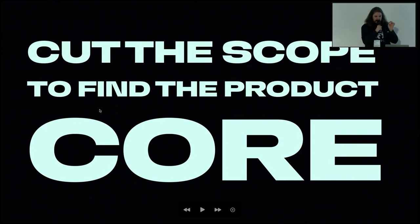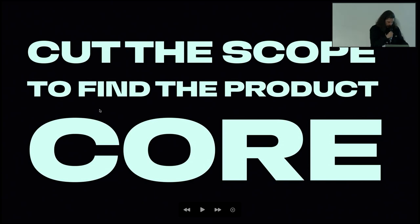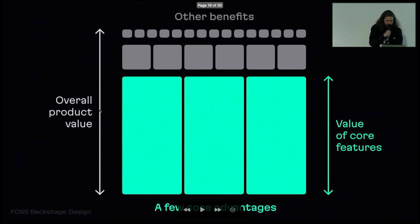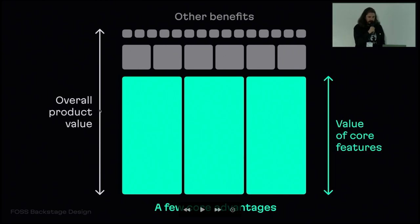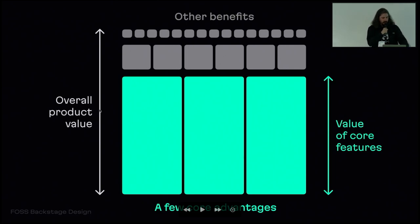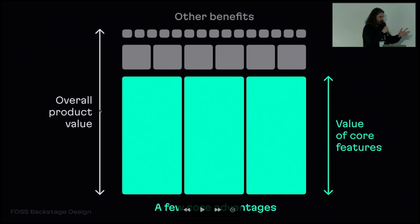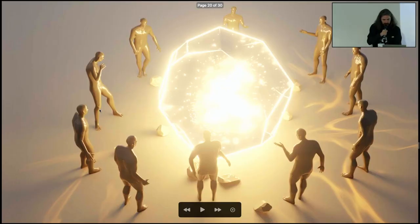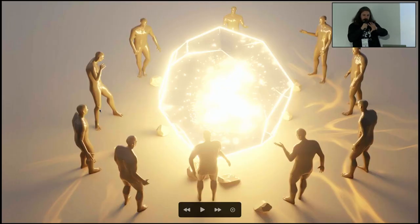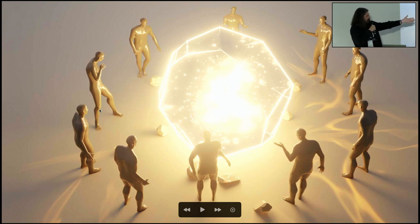Cut the scope to find the product core. We heard a story today about products that have a magic switch when they focus on the core. Your product can look like a variety of rectangles, each representing the weight of a feature's functionality. The exercise: find the most important one, strip the process back to the start, and build an MVP. You'll likely find the core of your product. Think of canonical examples — Uber or Dropbox started with one core feature. Find that one piece of raw material, polish it, and make it glow.